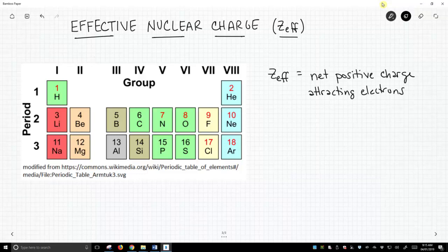As it turns out, Z_EFF is a numerical value, and so we have a formula that can tell us what this number is. The formula is Z minus S.